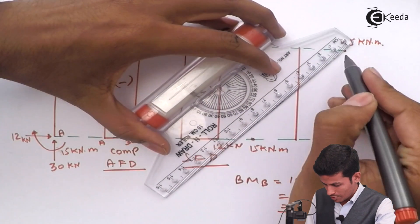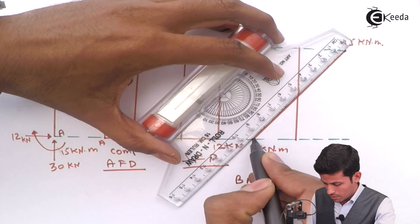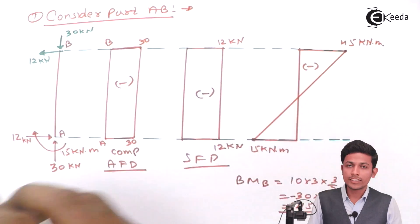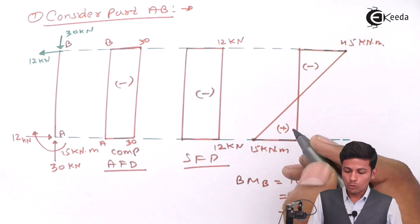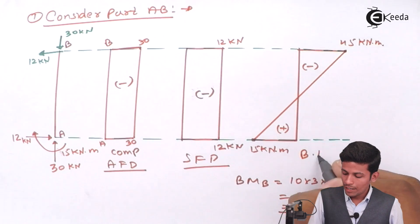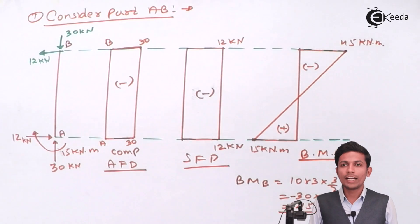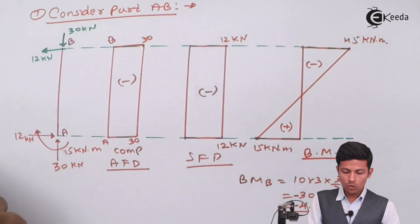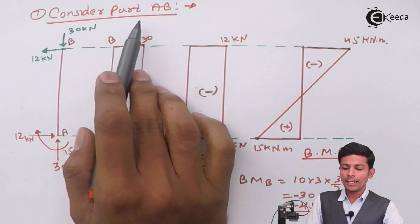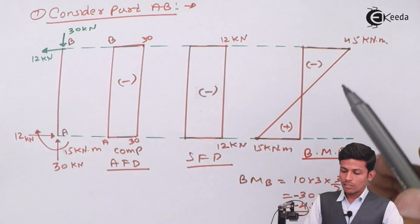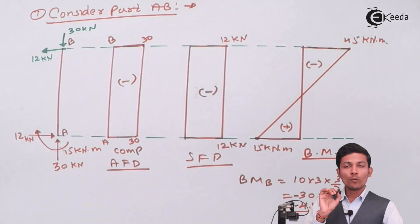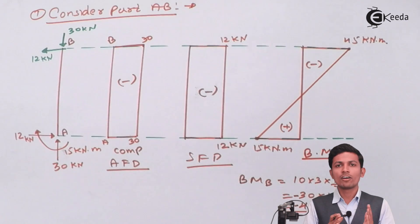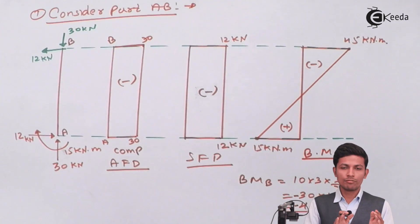The BMD for member AB shows −45 kN·m at B and 15 kN·m at A. Negative values are plotted inside the frame and positive values outside. Always take either the left or right portion only when calculating bending moment — do not consider the entire frame at once.